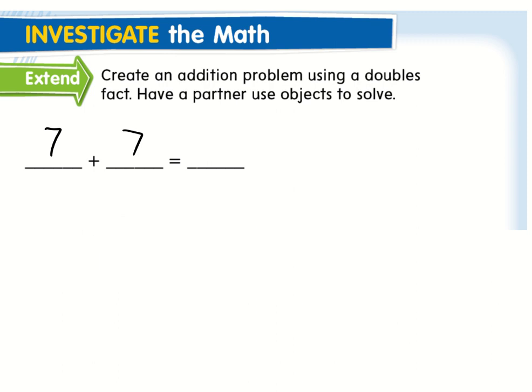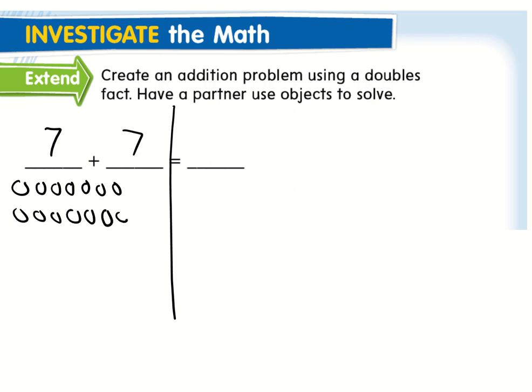Seven plus seven is a double fact because I've got the same number on both sides. If you're solving it at home or at school, we always draw a line down the middle so we don't get our numbers confused when we go to check our answers. So I'm going to draw seven circles and then seven more. Counting them all up — one through fourteen. So seven plus seven is going to be fourteen, boys and girls.